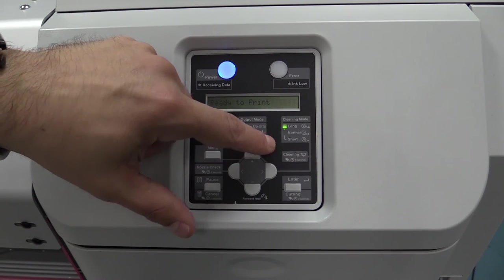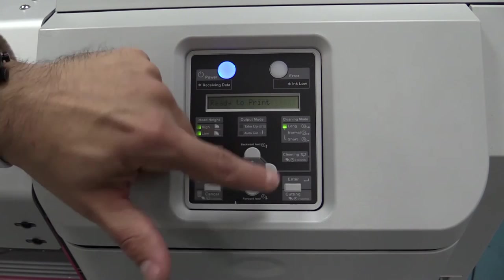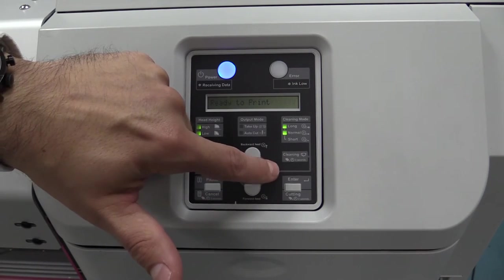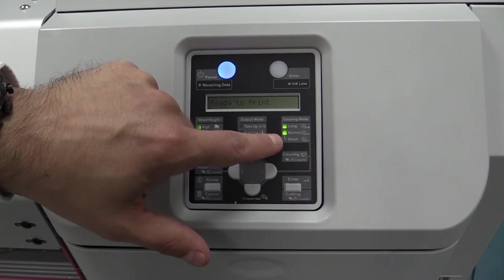To the right side of the panel, you can see the cleaning tree. So in the top right, you have the length of your clean. So if you tap the button, you can cycle through the different lengths, going from a long clean, to normal, to short.